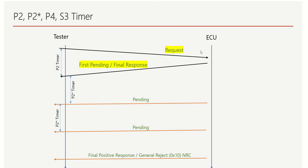The response should come within a predefined time. There are two types of responses: a pending response and a final positive response. In cases where the ECU cannot send a positive response immediately, it will send the 0x78 NRC, which is a pending response. Any kind of response — whether pending or final positive — must come within a predefined time, and that timer is called the P2 timer.